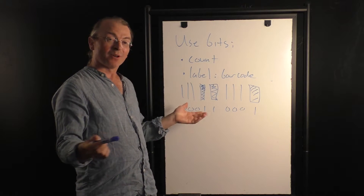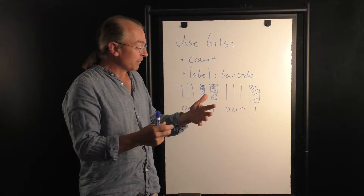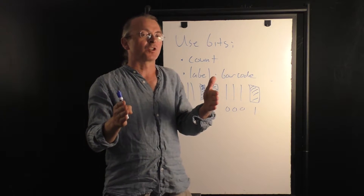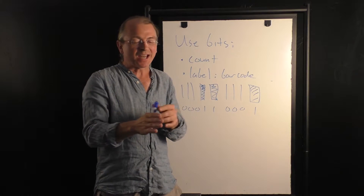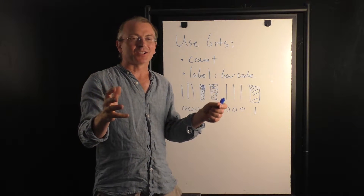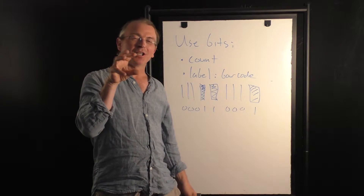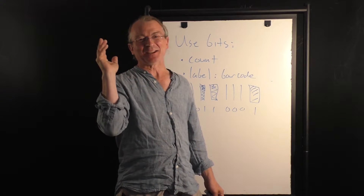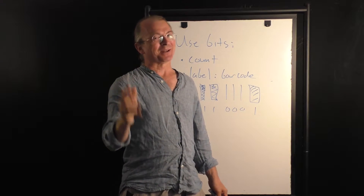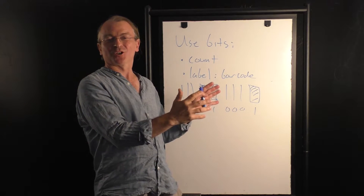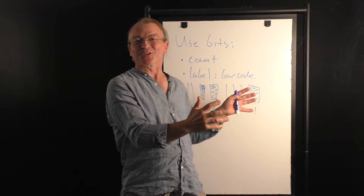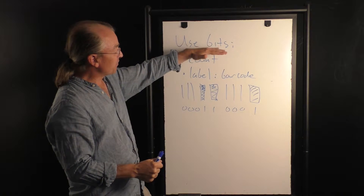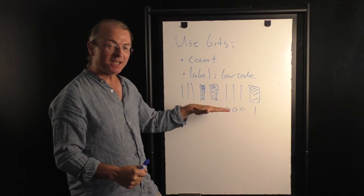It's a number in binary. But each item in the supermarket has its own specific barcode — a label that says this is an apple, a Gala apple from Washington State, or this is a box of All-Bran buds. So we can use these bits as labels.